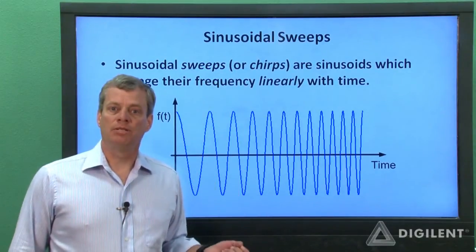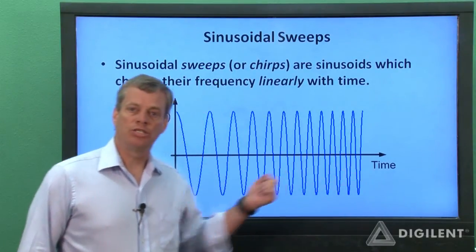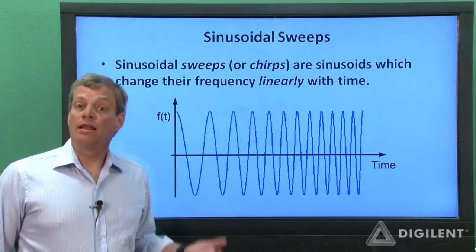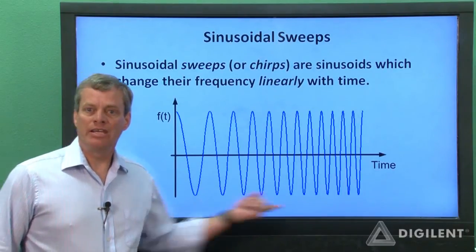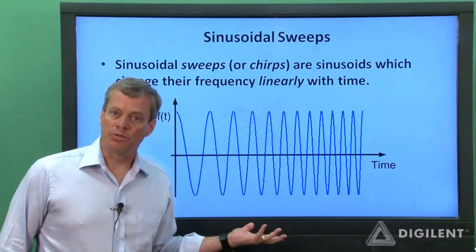Changing the frequency linearly simply means that the rate at which the frequency is changing is constant. The Analog Discovery's waveform generator can very easily generate swept sinusoidal signals for us.